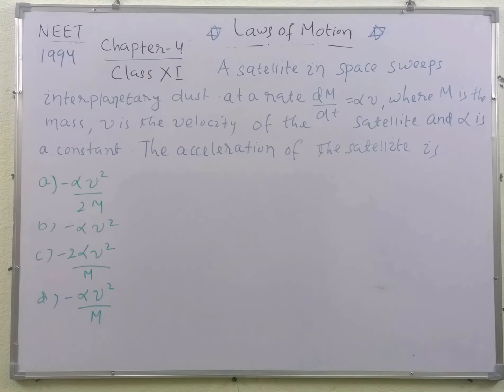Students, this question was asked in the 1994 NEET exam from chapter 4, laws of motion, class 11. A satellite in space sweeps interplanetary dust at a rate dm/dt = αv, where M is the mass, v is the velocity of the satellite, and α is a constant.